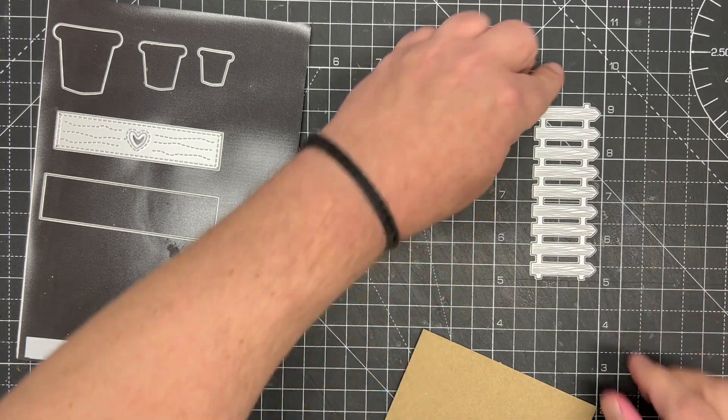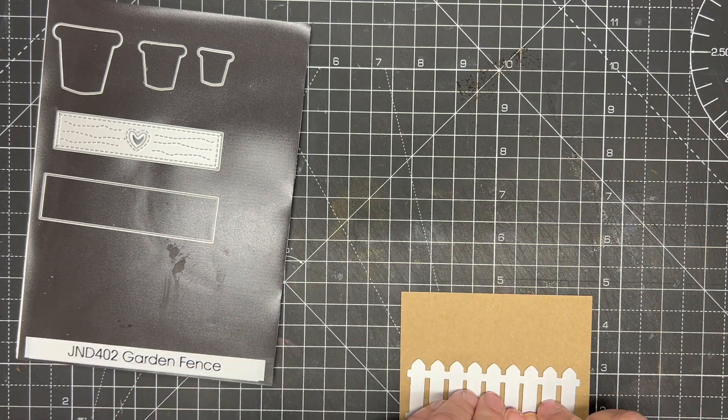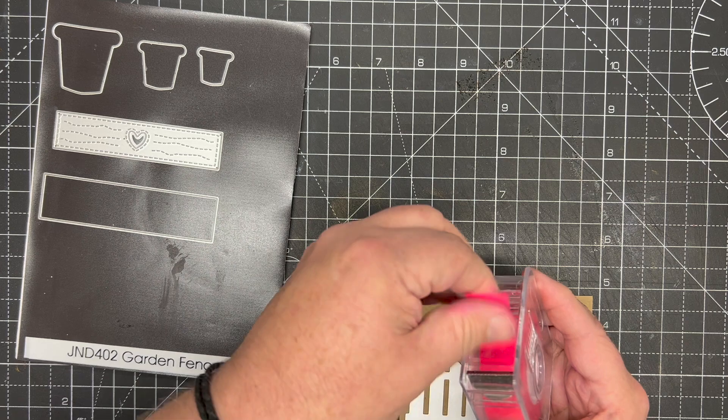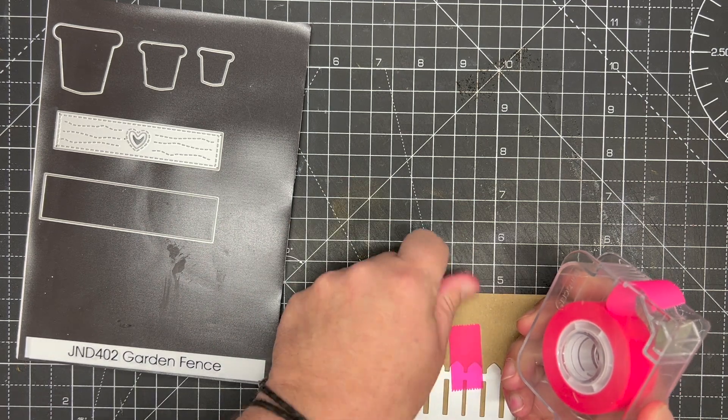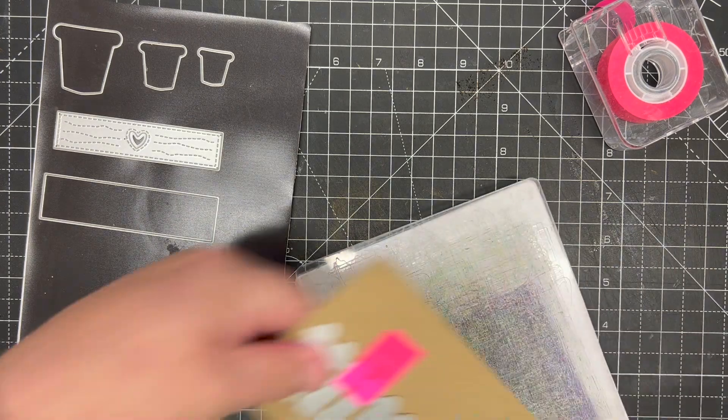I simply ink the die like I would do a stamp, place it onto the card, tape it down with a little bit of low tack tape, and run that through the die cutting machine.